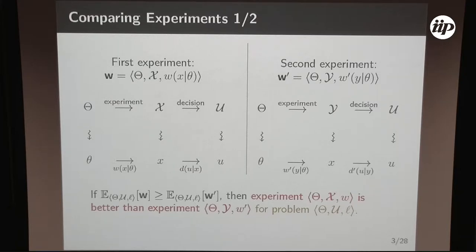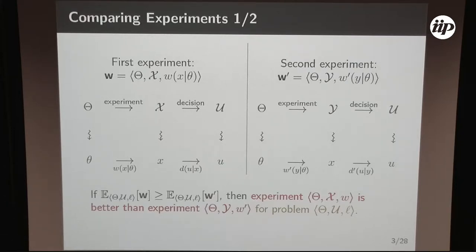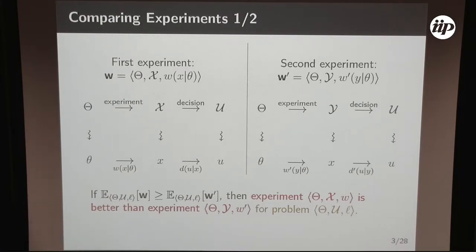In this way you can also compare experiments. The whole point of statistical comparison theory is comparing structures. If two experiments W and W' are about the same natural phenomena — on the same parameter space theta — you can say which one is better for a particular decision problem by comparing the expected payoffs. If the inequality holds, W is preferable to W' for that particular decision problem.